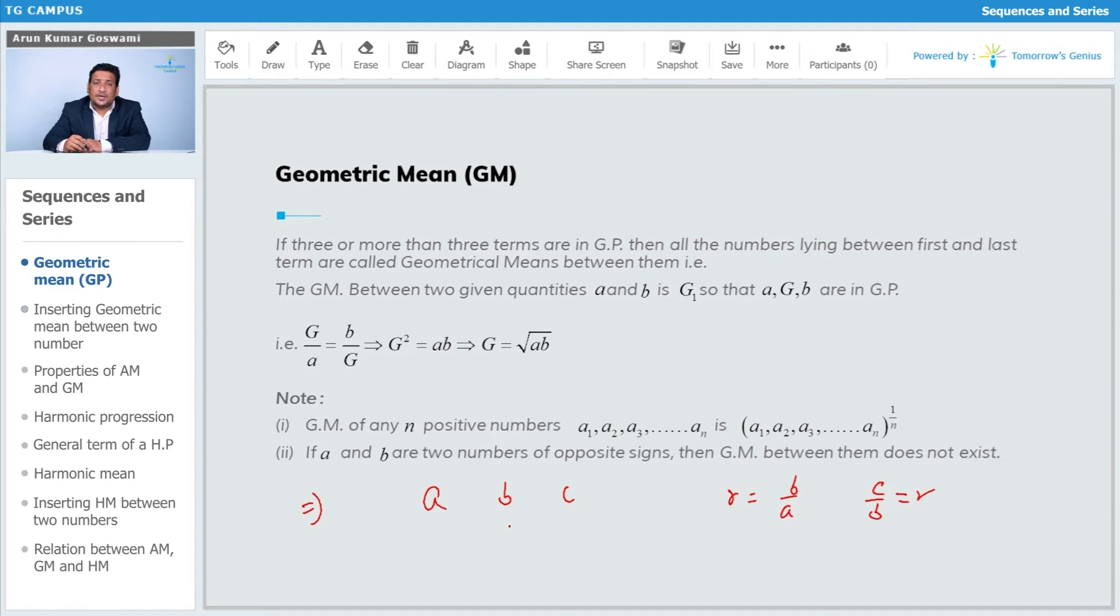We know that common ratio will be the same in GP, so we can say these are equal: b/a = c/b. If I do cross multiplication, I'll get b² = ac, and finally b = √(ac).